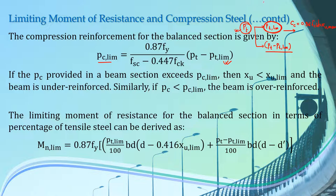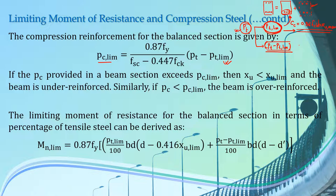We divided our doubly reinforced beams into two parts: first we had a balanced singly reinforced beam, and then we had a steel beam. The steel beam means we have steel reinforcement in both tension and compression zones but no concrete. So PT limiting is the amount of steel present in the first section — the balanced singly reinforced beam — and the tensile force developed in PT limiting is used to balance the compressive force in concrete. The tensile force due to the remaining steel, which is PT minus PT limiting, is balanced by the compressive force in the compressive steel alone.